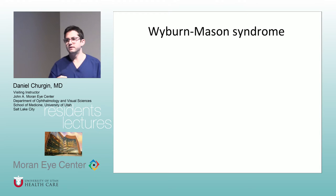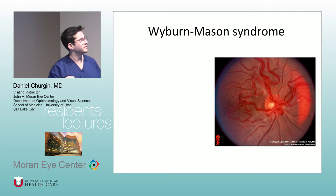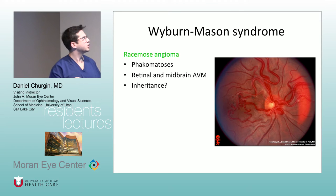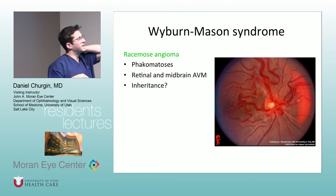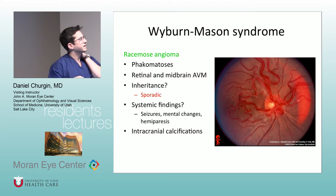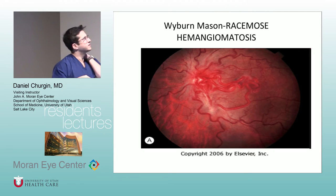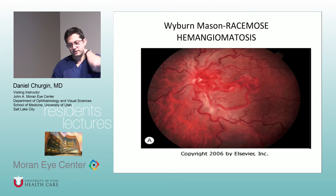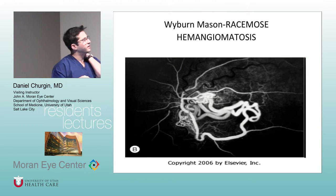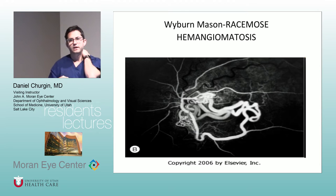Wyburn-Mason syndrome is the other name for racemose angiomatosis. It's retinal and midbrain AVMs on the same side, and it's sporadic. They also get seizures, mental changes, hemiparesis, and intracranial calcifications. They get rapid filling and don't typically get leakage. They can get vein occlusions or other vascular events. There's no treatment typically necessary unless they become symptomatic. I've seen OCAP questions about this syndrome and its inheritance.